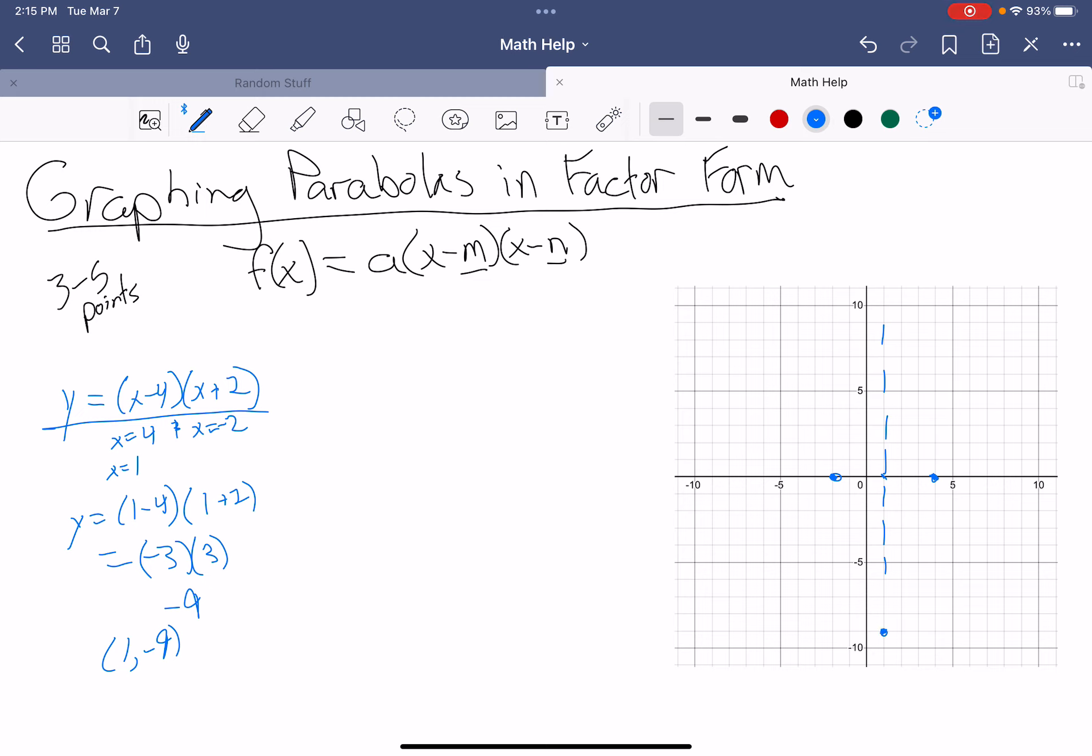I've already found three points. But if I want a few more, I could find my y-intercept. The way I find my y-intercept is by just looking at the actual numbers. I'm going to take a look at my negative 4 and my 2 and multiply these together. So negative 4 times 2, that gives me negative 8. So I now know there's a y-intercept at negative 8. And based off the axis of symmetry, there would be another point right here. I have my 3 to 5 points right there.